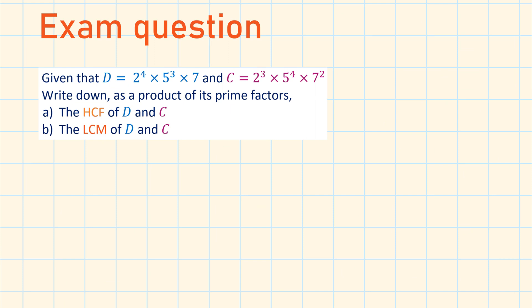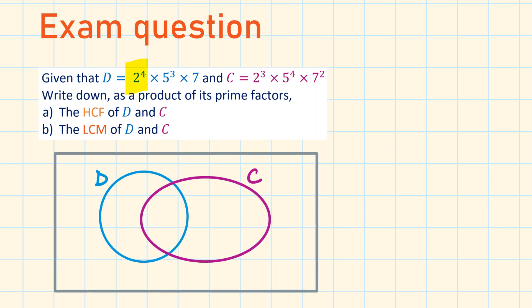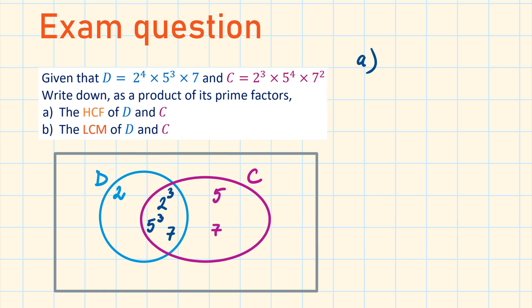Exam question: Given D = 2⁴ × 5³ × 7 and C = 2³ × 5⁴ × 7², write down the HCF and LCM as a product of prime factors. D has 2⁴ and C has 2³, so 2³ is common and goes in the overlap; 2¹ is leftover in D. 5³ is common in the overlap; 5¹ is leftover in C. One 7 is common in the intersection; one 7 is leftover in C. The HCF is the intersection: 2³ × 5³ × 7. Since the question asks for the product of prime factors, we leave it in this form.